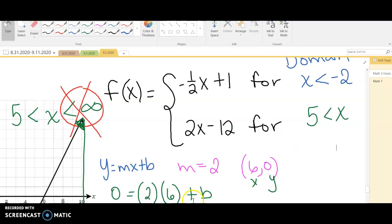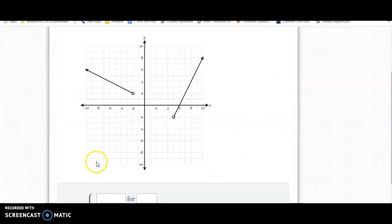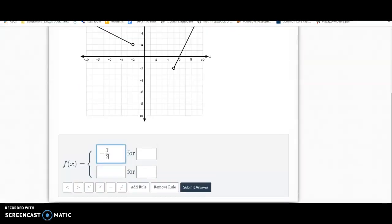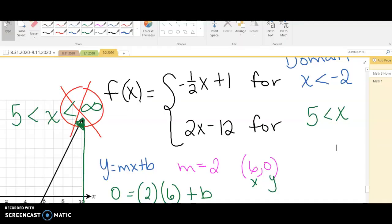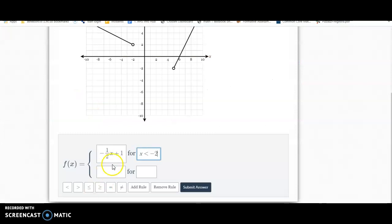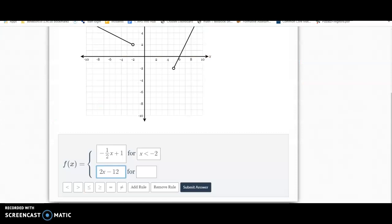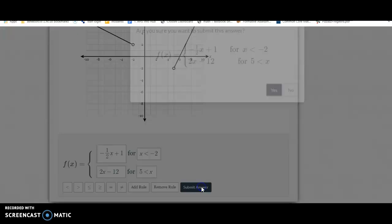So let me go ahead and show you how to type that into Delta Math. So we said it was -1/2. Move the x over by pressing the right arrow key. Plus 1 for x less than -2. And then let me type my second equation. We found it to be 2x - 12 for 5 is less than x. And so we submit our answer. There we go.